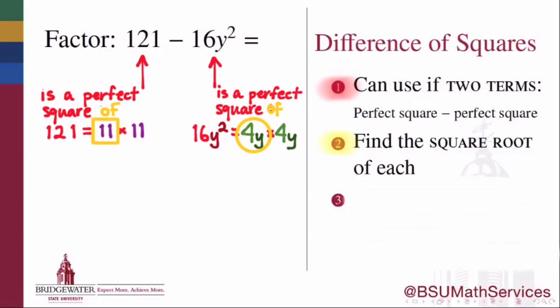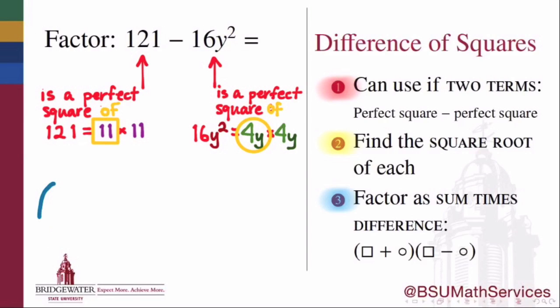What we do is set up a product of two factors, and in one of those factors is the sum of the two square roots, and the other of those factors is the difference of those two square roots. So we factor it as the sum times the difference.